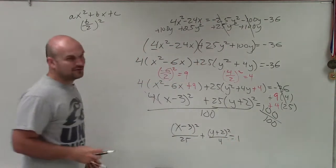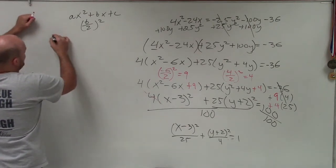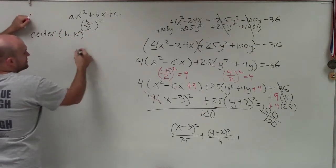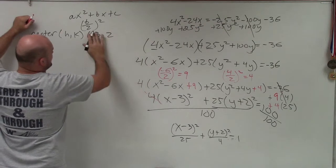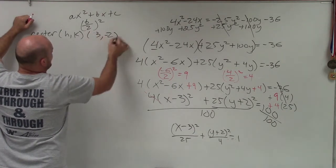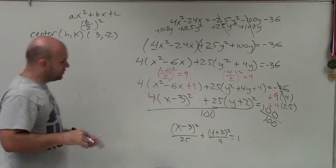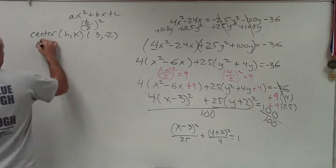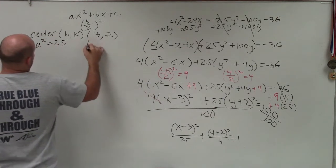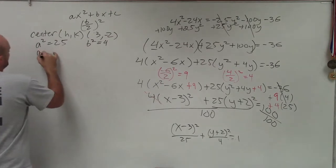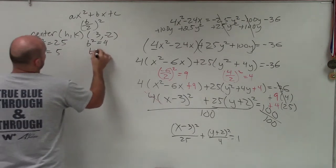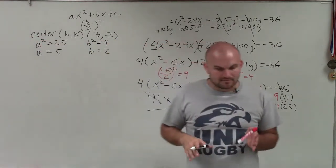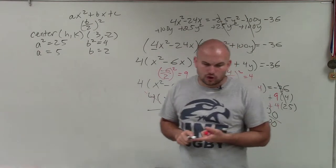Now we can go ahead and graph this. Looking at the equation, I know the center is (h, k). The center in this case is positive 3, negative 2. Also notice that the larger number in the ellipse is your a squared. So a squared equals 25 and b squared equals 4. Taking square roots, a equals 5 and b equals 2. That's very important because it tells us how to find our vertices and co-vertices.